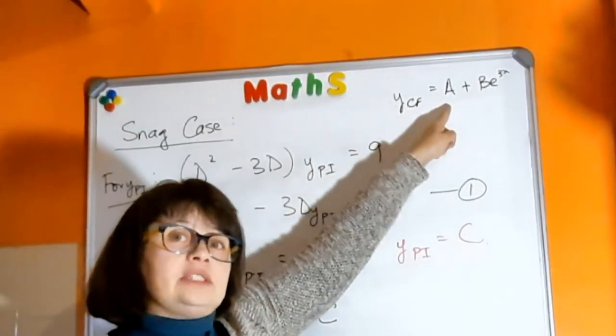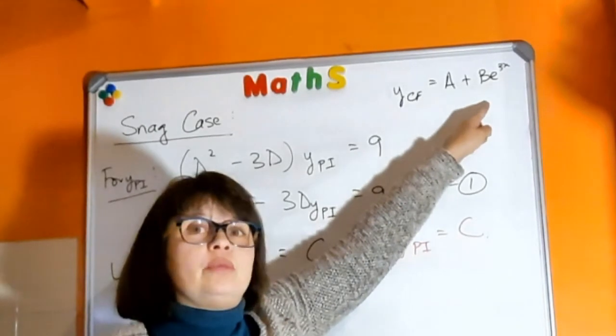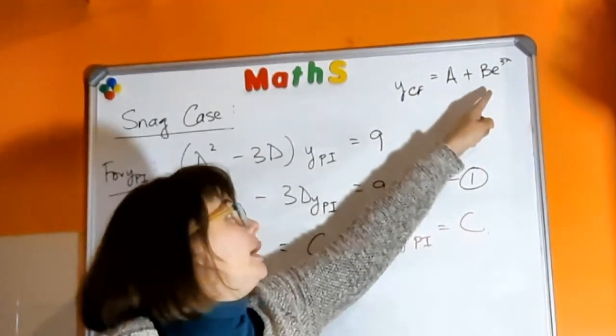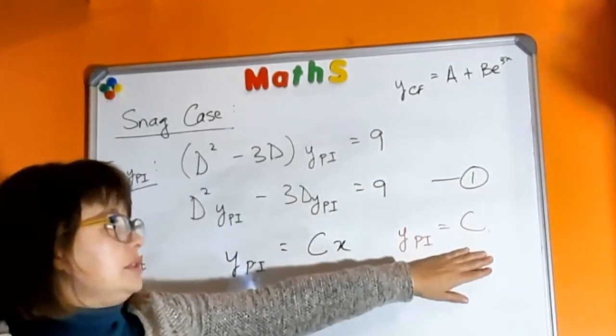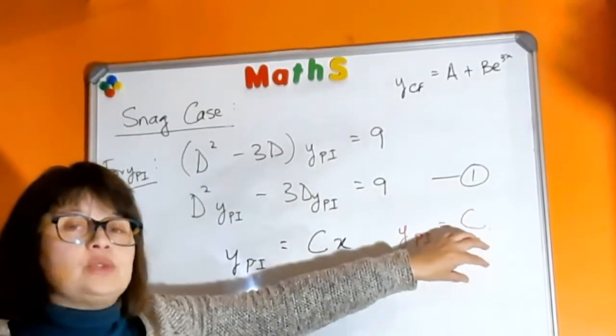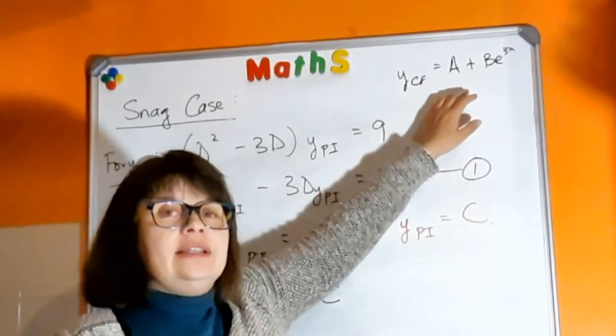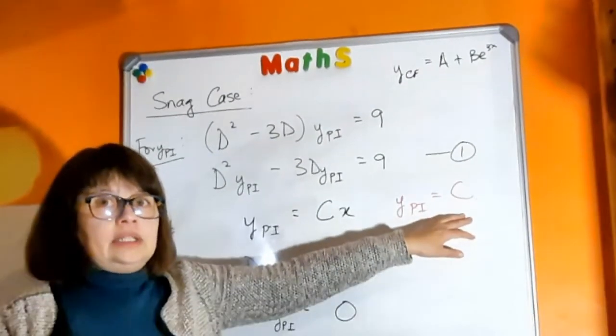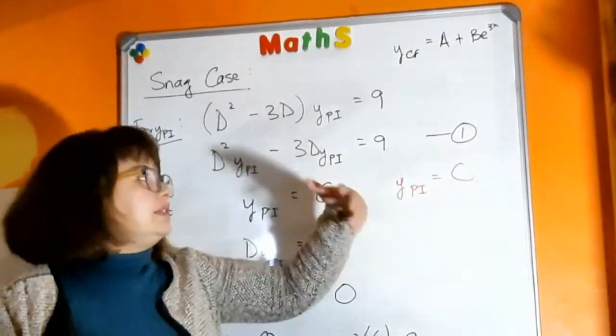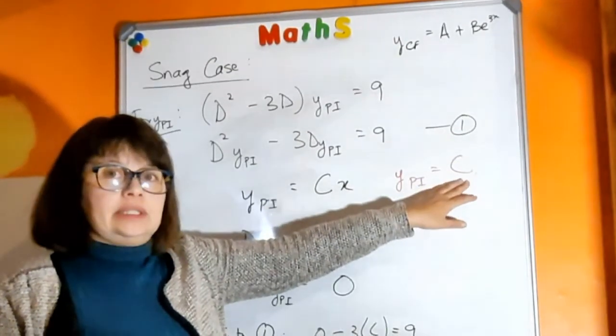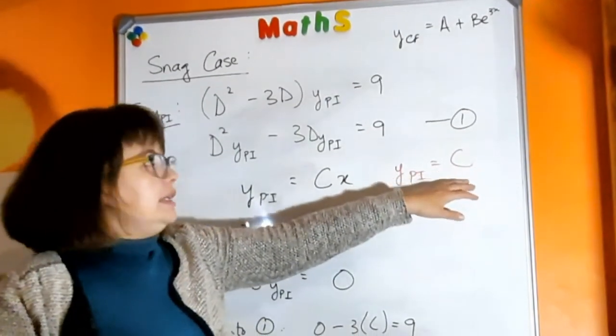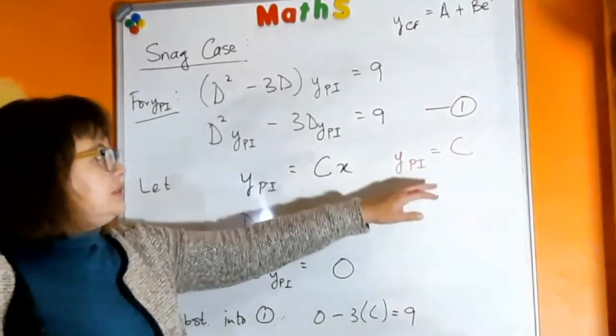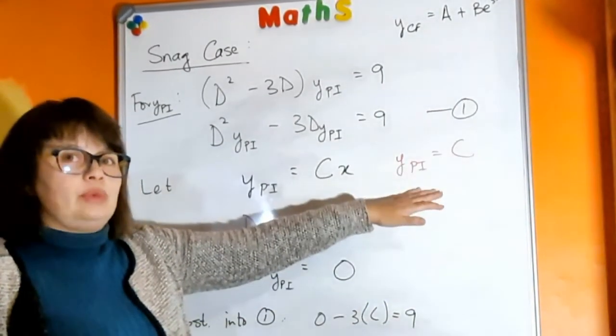Now whenever you have your trial function being the same form as one of the terms in your complementary function, then this trial function is not going to work. It's almost like a forewarning for you that you can tell that it's not going to work. If you go ahead and you don't notice that, you in any case are going to find that it's not going to work out, but it's a good way to see beforehand whether or not it'll work.